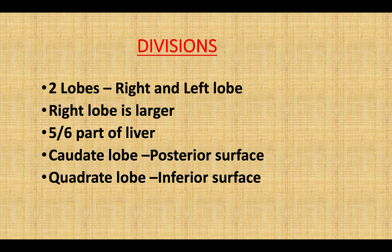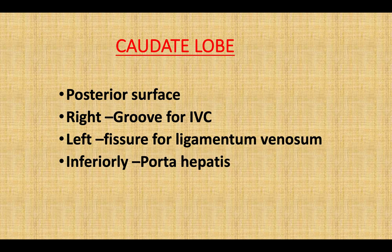Within the right lobe there are two additional lobes: the caudate lobe, present on the posterior surface of the right lobe, and the quadrate lobe, situated on the inferior surface of the right lobe.